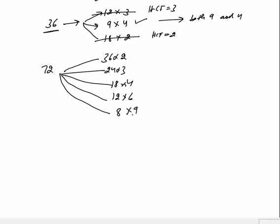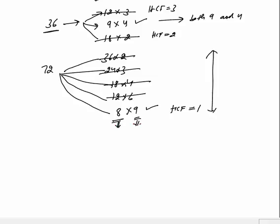For divisibility by 72, we break 72 into a product of 2 co-prime numbers. 36×2, 24×3, 4×18, 12×6 are not co-prime. But 8 and 9 are co-prime because their HCF is 1. So whenever we check divisibility by 72, the number should be divisible by both 8 and 9. For 8, check the last 3 digits; for 9, check the sum of digits.